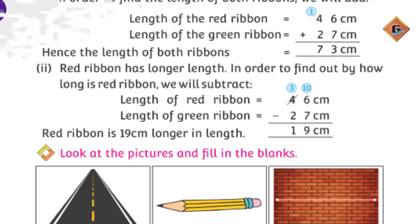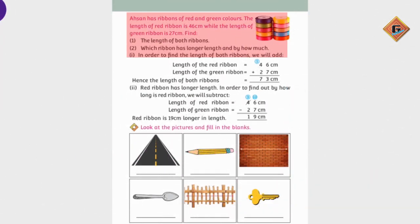In the same way, we have this picture on page number 114. Ayesha has ribbons of red and green colors. The length of the red ribbon is 46 centimeter while the length of the green ribbon is 27 centimeter. Find the length of both ribbons, meaning now we have to add this. And second, we have to find which ribbon has longer length and by how much.